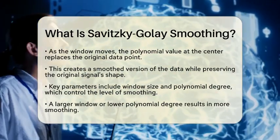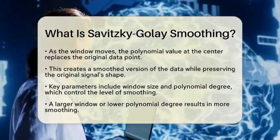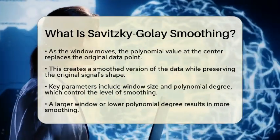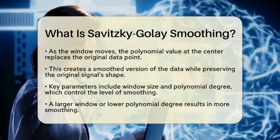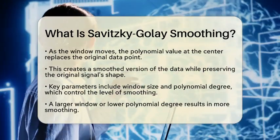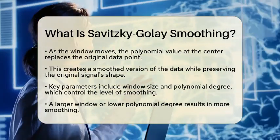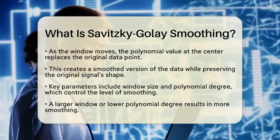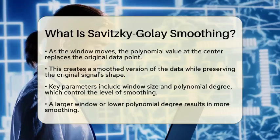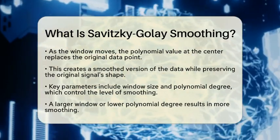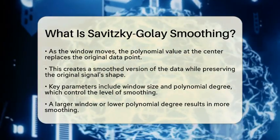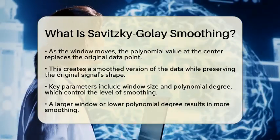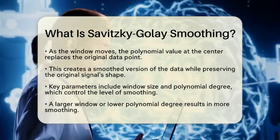There are key parameters in this method that you can adjust: the window size, which is the number of points in the sliding window, and the polynomial degree control the level of smoothing. A larger window or a lower polynomial degree results in more smoothing, while a smaller window or a higher degree keeps more detail.